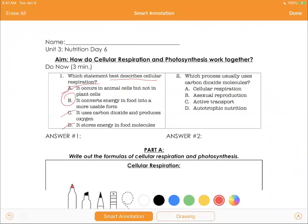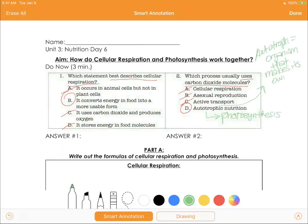Number two, which process usually uses carbon dioxide molecules? So if it's using carbon dioxide molecules, it's a reactant. And which one uses that? Not cellular respiration. We never spoke about asexual reproduction. Haven't spoken about active transport yet. So the answer has to be D, autotrophic nutrition. This is just a fancy word for photosynthesis. The word autotrophic means that they make their own food. So an autotroph equals organism that makes its own food, such as plants - glucose, right? So photosynthesis is autotrophic nutrition. Answer for one is B, answer for two is D.